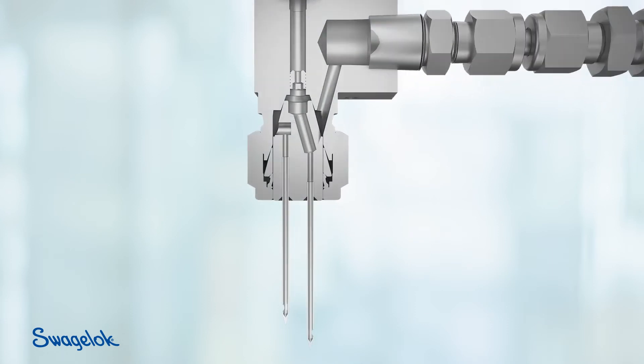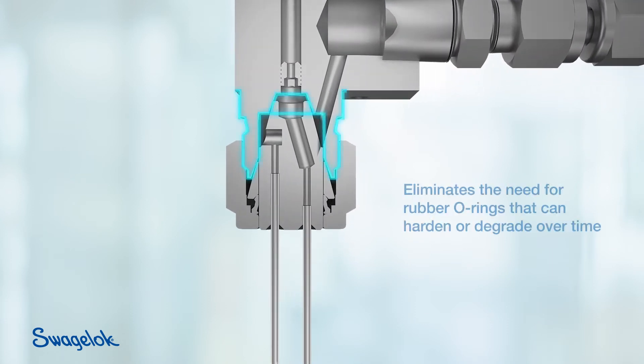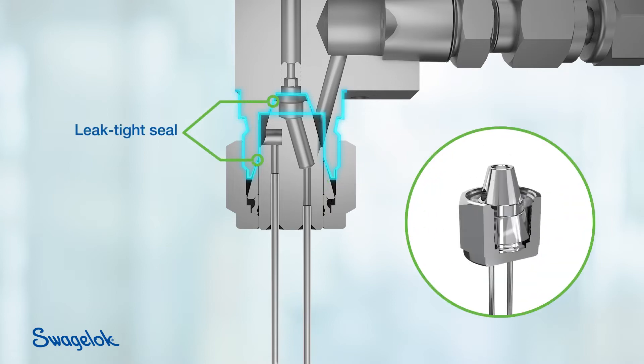The Swagelok grab sampling valve uses a Swagelok tube fitting instead of the typical rubber O-ring, which can lead to system leaks as the rubber hardens or degrades over time. Utilizing the proven Swagelok tube fitting design, the needle assembly is swaged to the valve body, creating a leak-tight metal-to-metal seal in two places.